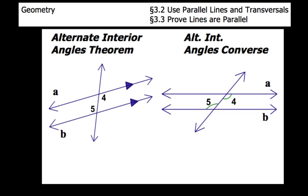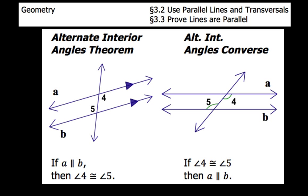Next, we're going to take a look at the alternate interior angles theorem and the alternate interior angles converse. In the diagram on the left, we notice that two lines are parallel. So if two parallel lines are cut by a transversal, then alternate interior angles are going to be congruent — if A is parallel to B, then angle 4 is congruent to angle 5. For the converse, we don't know the lines are parallel; we only know that angle 4 and angle 5 are congruent. So if two lines are cut by a transversal such that alternate interior angles are congruent, then we conclude those two lines are parallel.